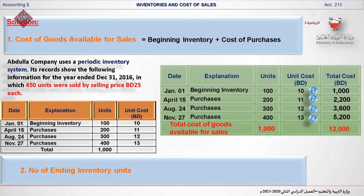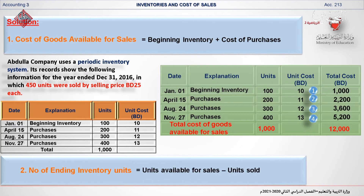In requirement number 2 you need to calculate the number of ending inventory units, which equals units available for sale minus units sold.